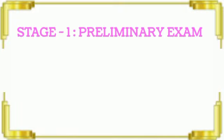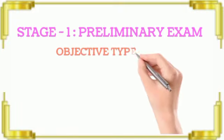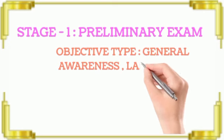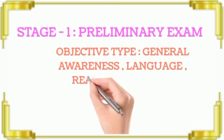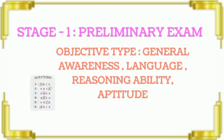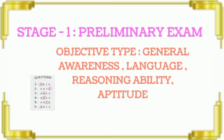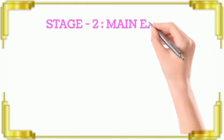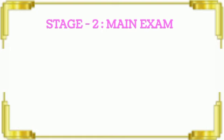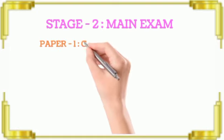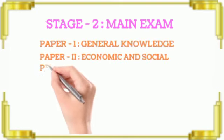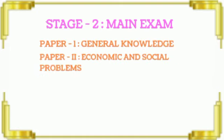How is the exam structured? The preliminary paper is objective type, covering general awareness, English language, reasoning ability, and aptitude. Then in the main exam there are two papers: the first paper covers general and social problems, and the second paper covers economic and social problems.